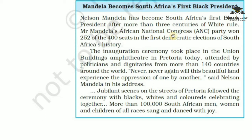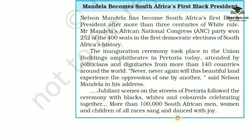Nelson Mandela has become South Africa's first black president after more than three centuries of white rule. Mr. Mandela's African National Congress (ANC) party won 252 of the 400 seats in the first democratic elections of South Africa's history. The inauguration ceremony took place in the Union Buildings amphitheatre in Pretoria, attended by politicians and dignitaries from more than 140 countries. 'Never, never again will this beautiful land experience the oppression of one by another,' said Nelson Mandela. Jubilant scenes followed on the streets of Pretoria, with blacks, whites, and coloureds celebrating together.